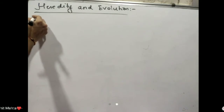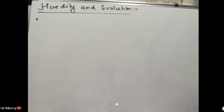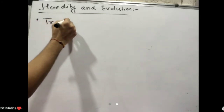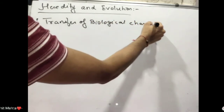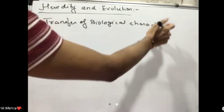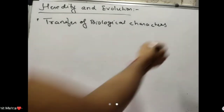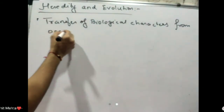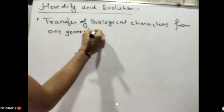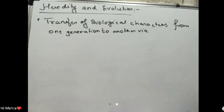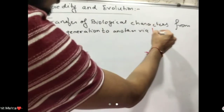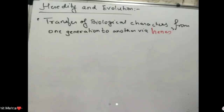So what is heredity? Heredity is the transfer of biological characters — like someone's nose looks like their mom's, someone else's nose looks like their mom's too. It is the transfer of biological characters from one generation to another via something called genes. This is called heredity. And the differences are called variation.